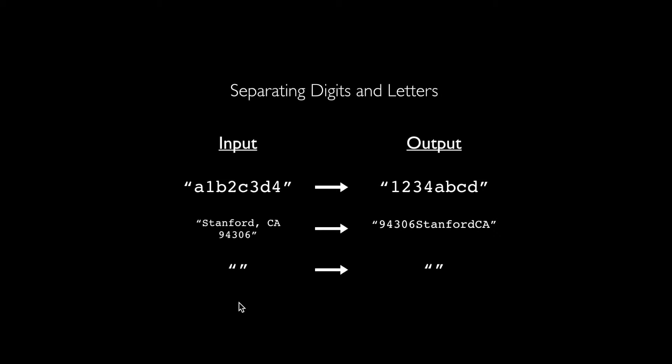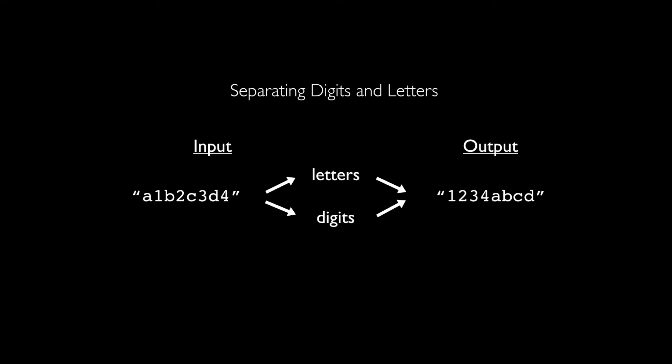For example, in the edge case of having an empty string as input, we would just get the empty string as output. The approach is to sort all characters into either letters or digits — ignoring anything else — and then concatenate them to create the output. We'll generate two intermediate strings: letters (ABCD) and digits (1234), then concatenate them to get the output 1234ABCD.